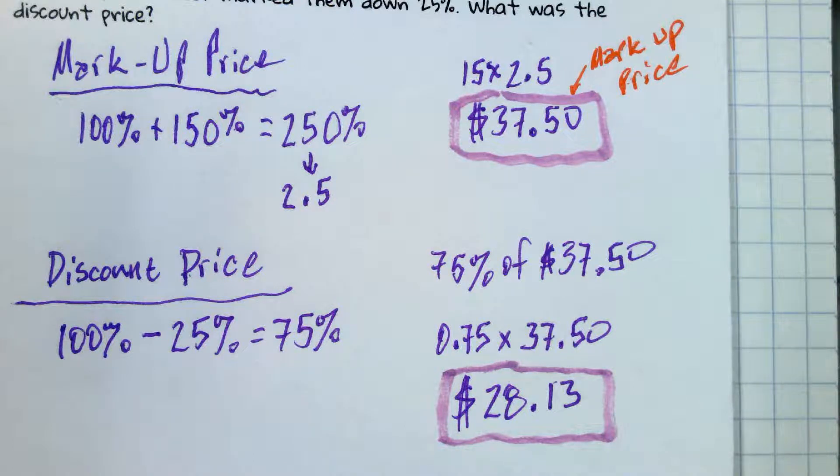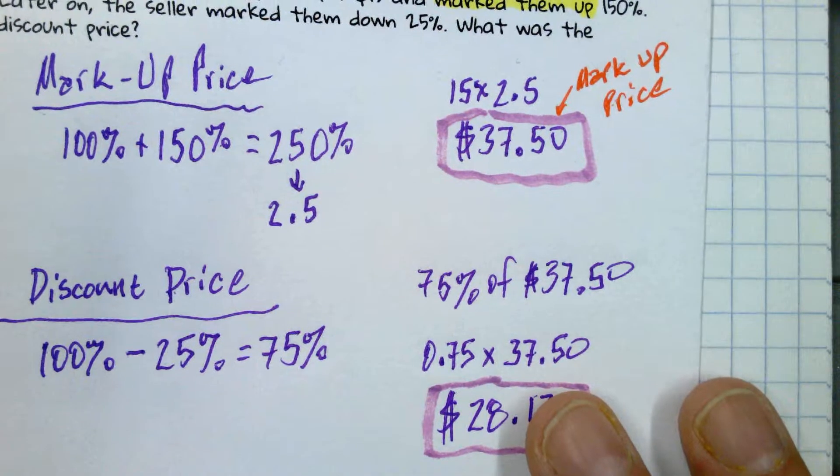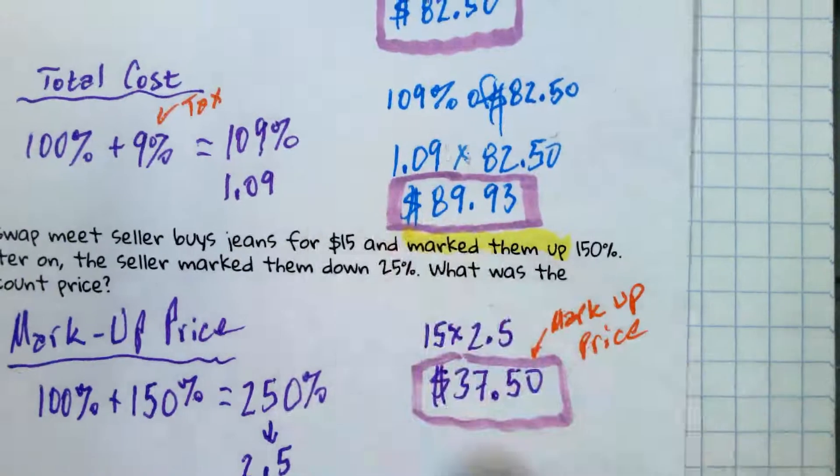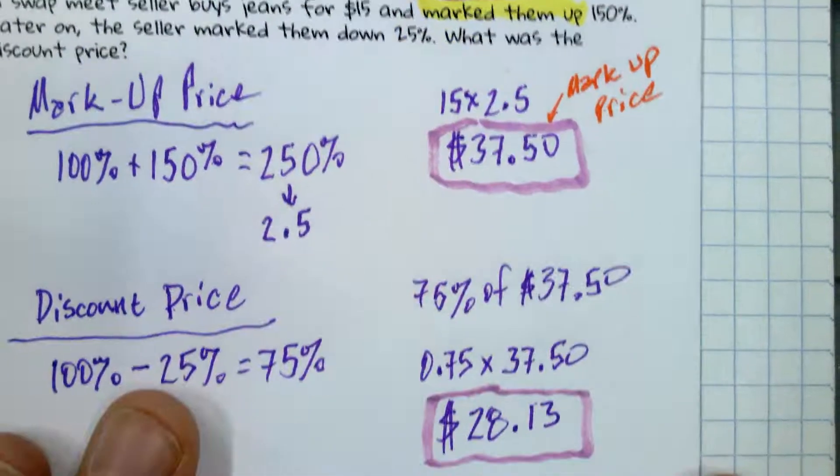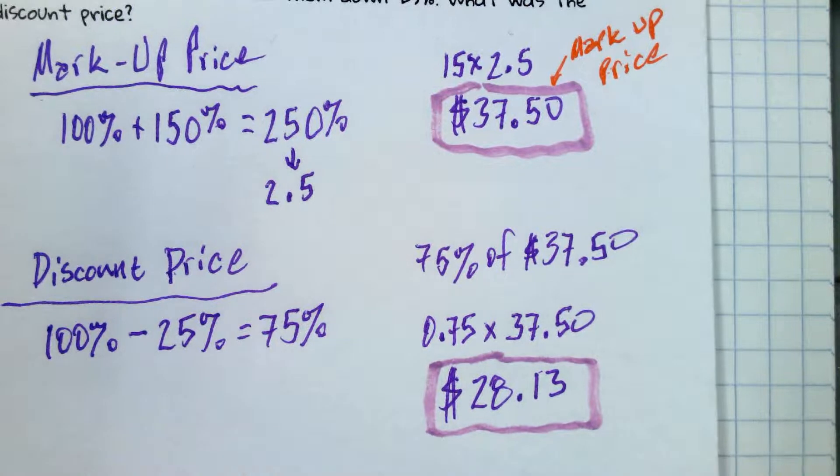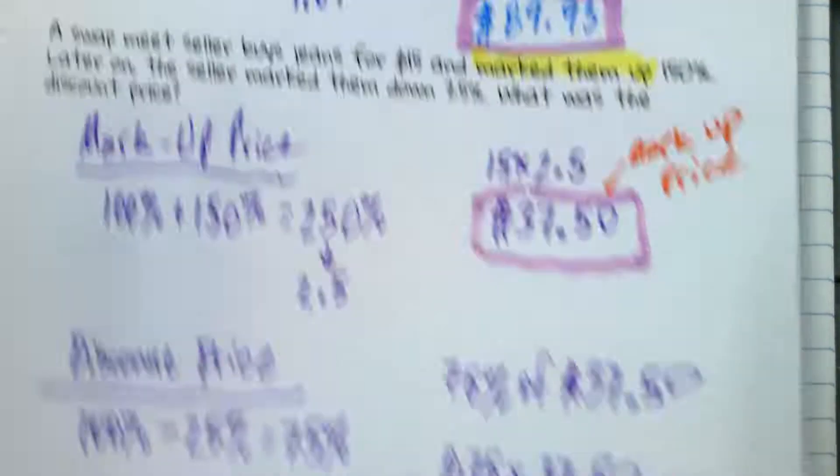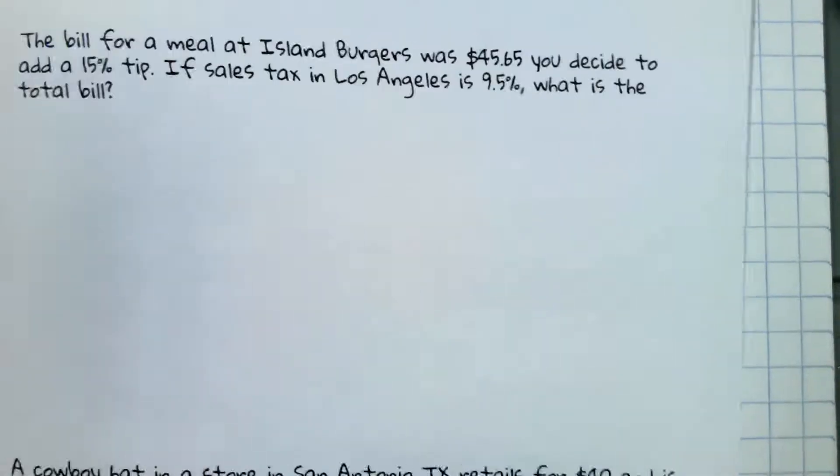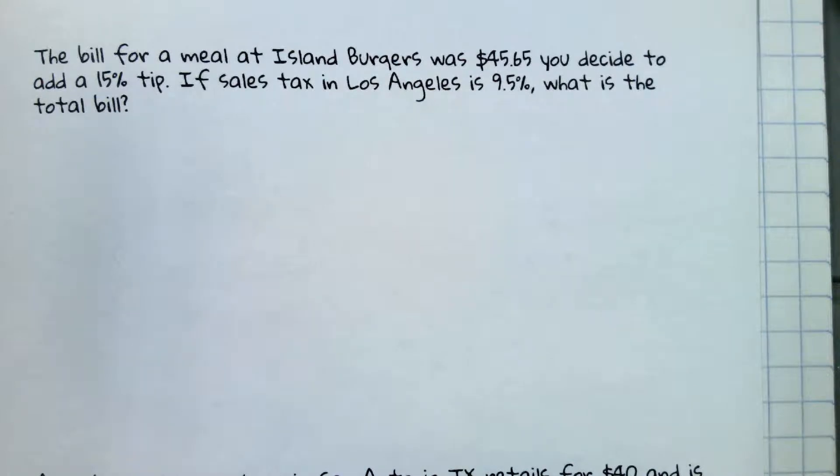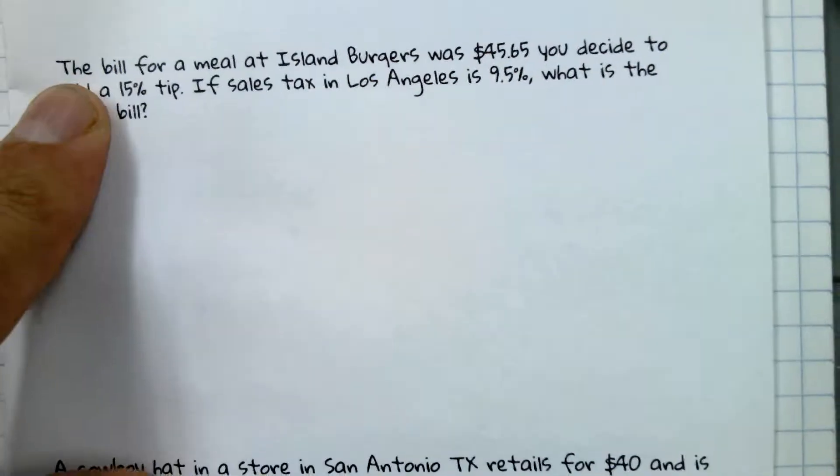It's $28.13 now. So how much profit is he making? He's making $13.13. Ready to move on to the next problems? Mondo, would you read this one at the top?